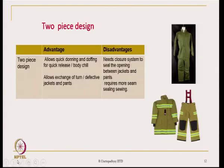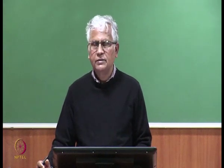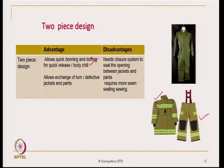Two-piece design is another alternative — there is a trouser and there is a jacket. Two-piece design allows quick donning and doffing for quick release of heat or body chill, and allows exchange of defective jackets and pants. If the jacket is defective, you can remove it and take a new one — the pant may still be working. They are independent of each other. It does, however, need a closer system to seal the opening between jackets and pants, and requires more seam sealing and sewing.